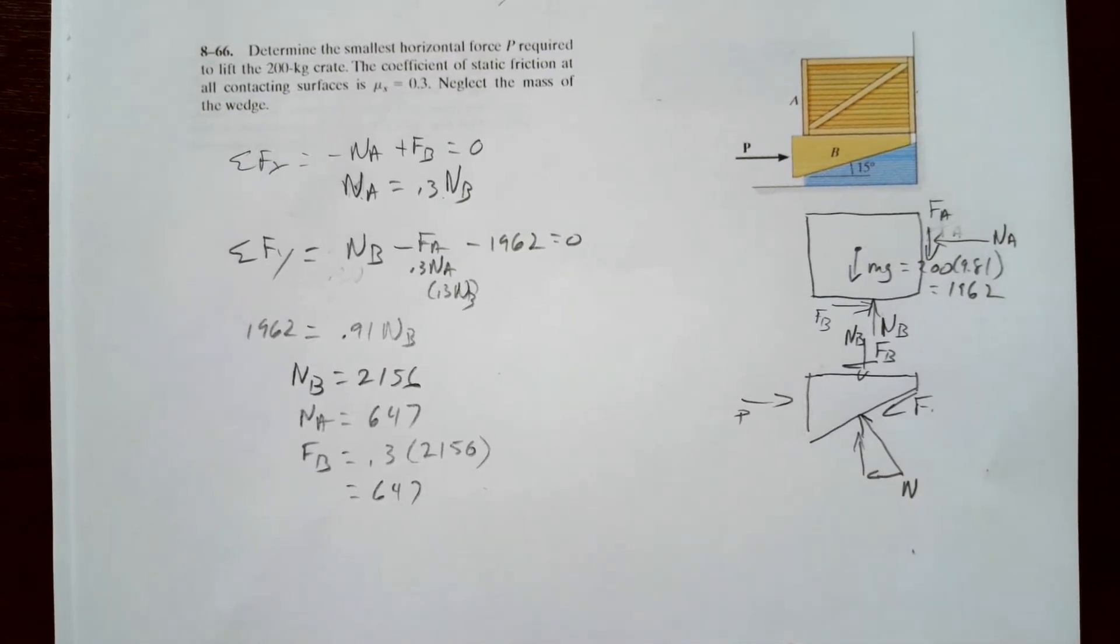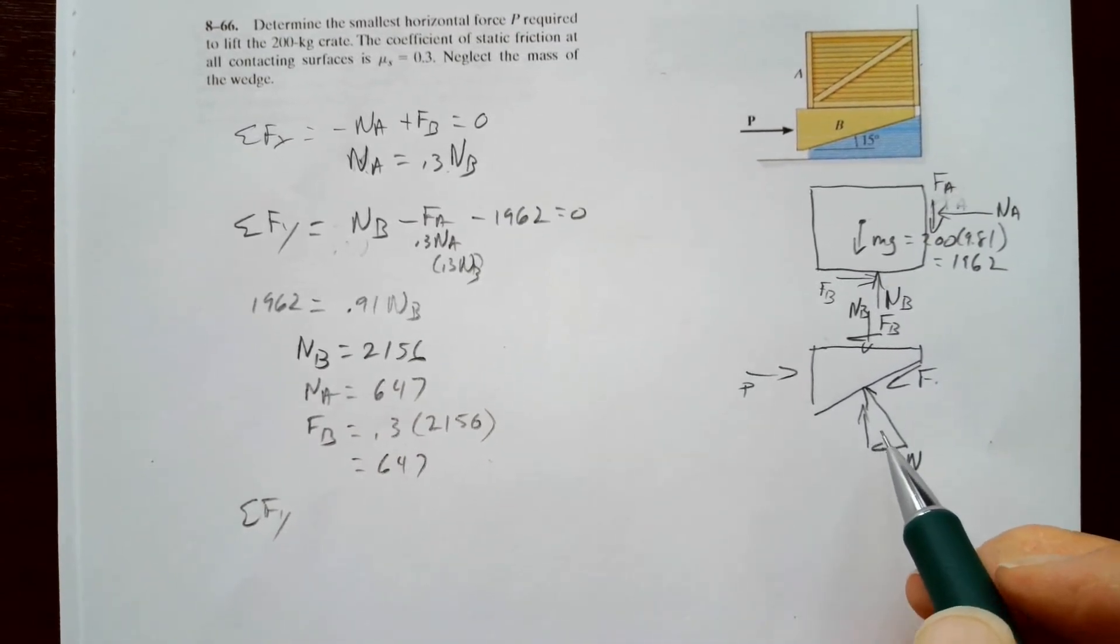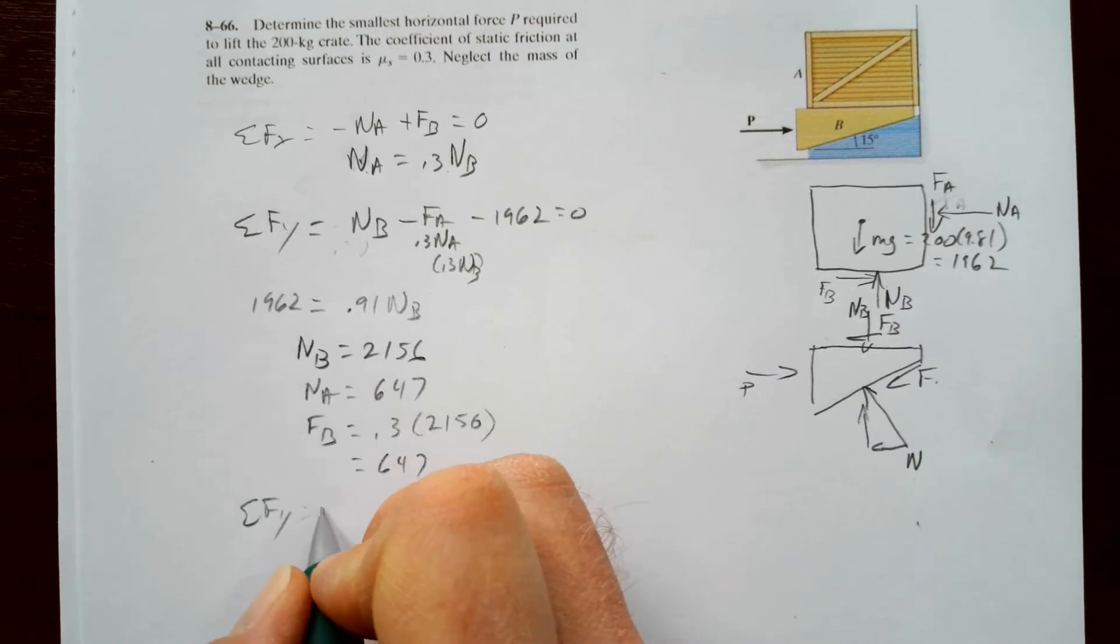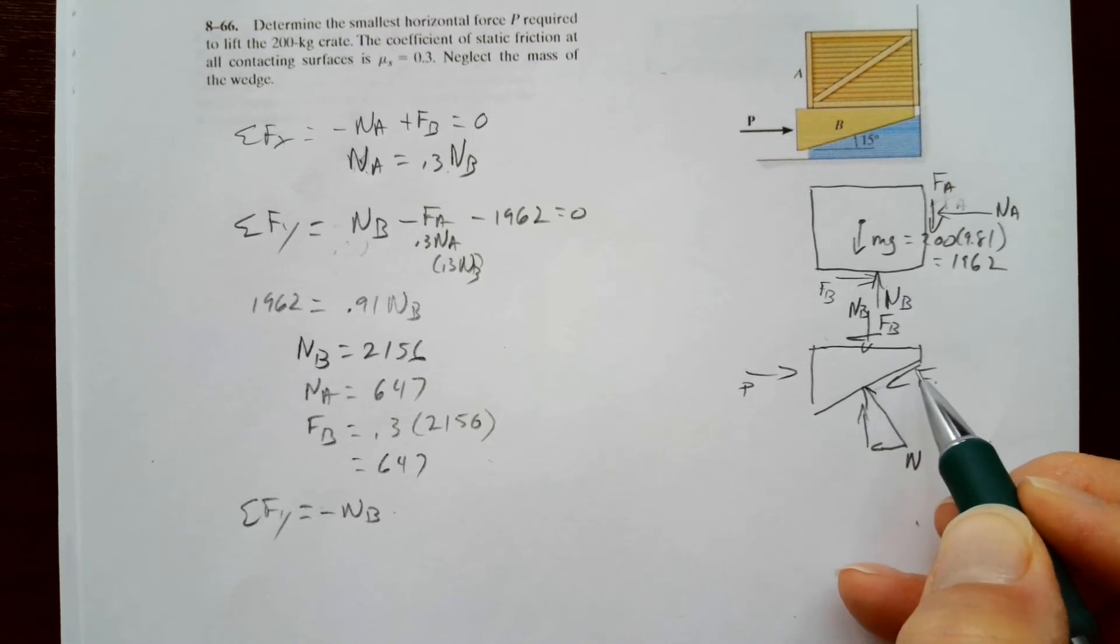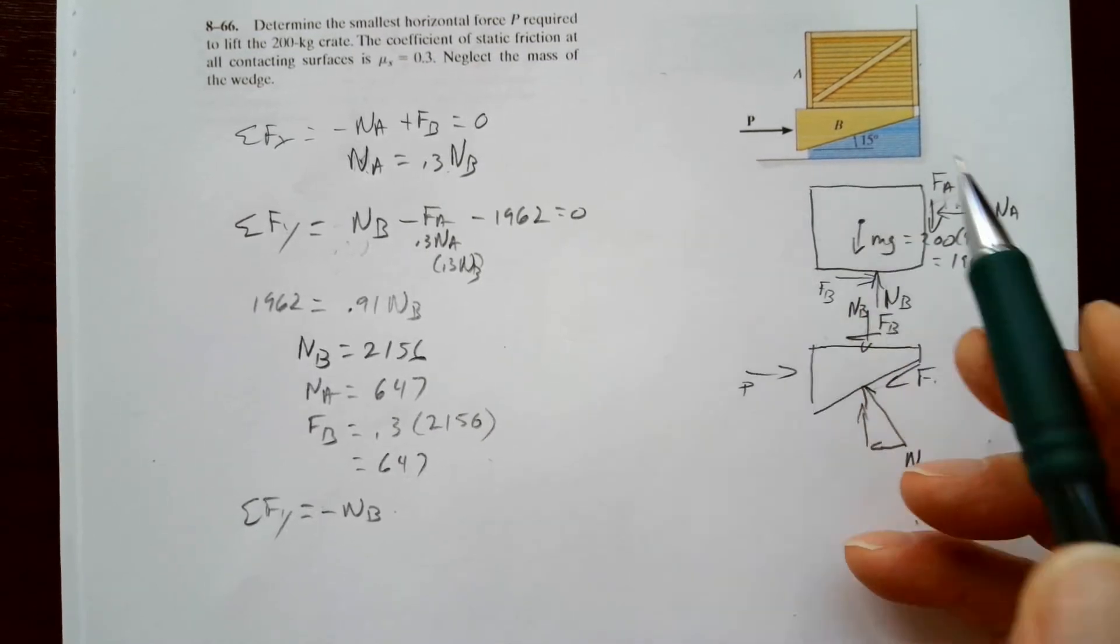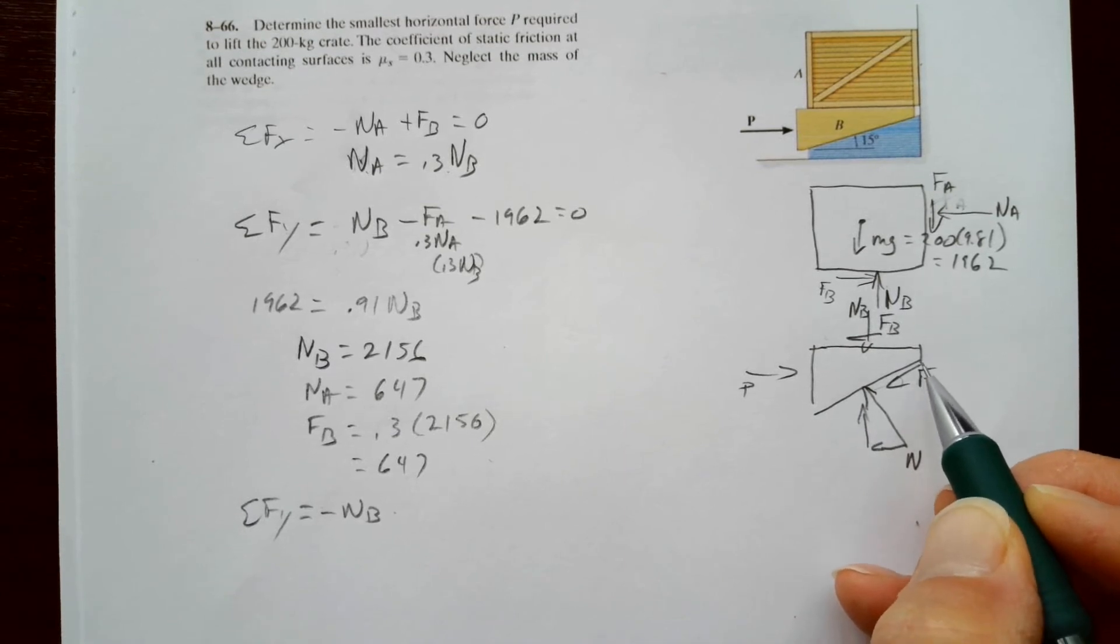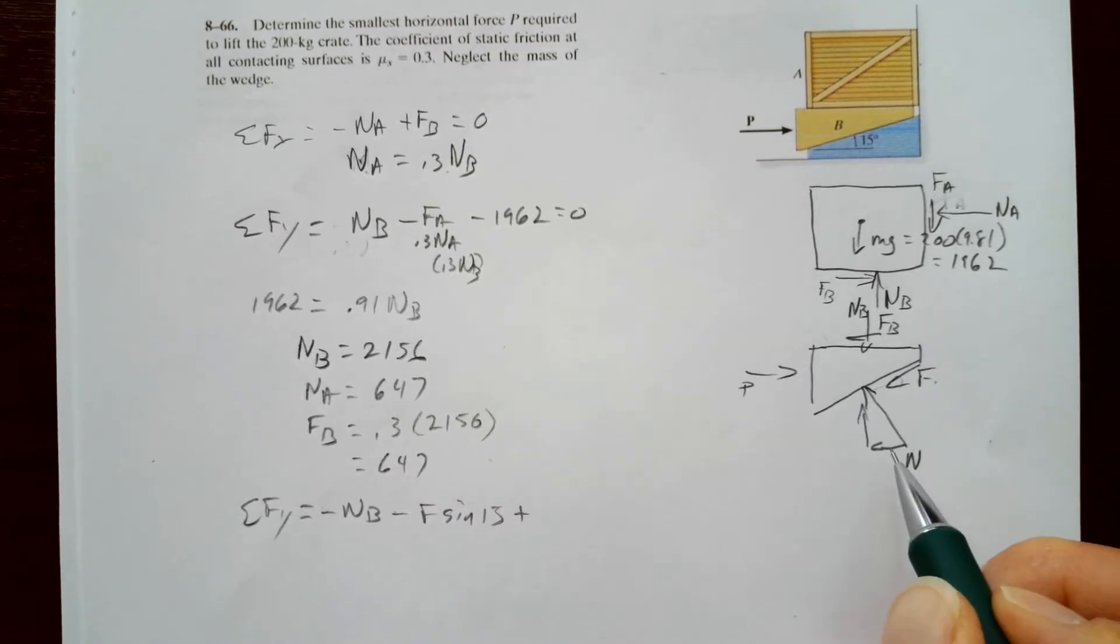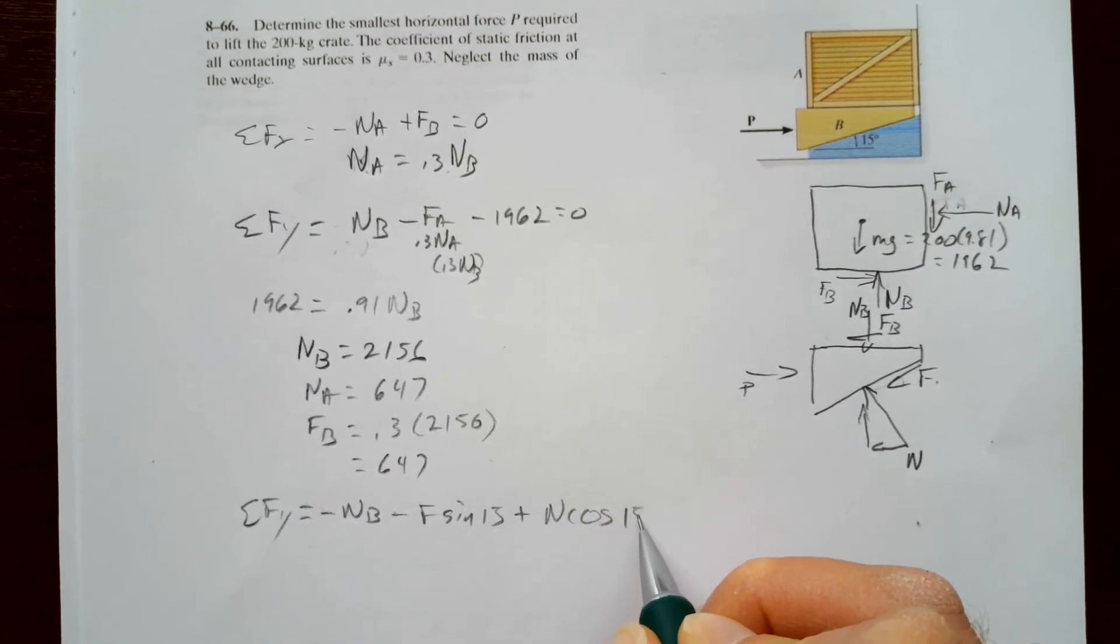Now let's look at the wedge here. So on the wedge, we'll sum the forces in the Y direction. So in the Y direction, we have NB down, negative NB. And we've got F going down. This angle here is 15. So in the Y direction, we're going to have the sine. So negative F sine 15. Plus N pushing up. So N cosine 15 equals 0.